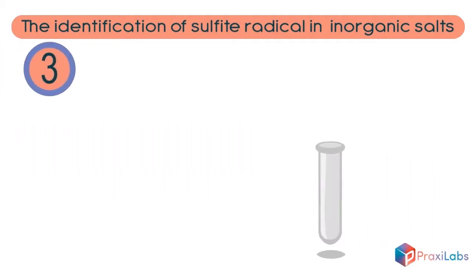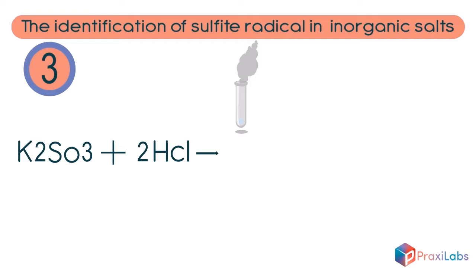Place a small amount of the salt in a test tube using a spatula. Then add drops of dilute hydrochloric acid. Notice the evolution of a gas that has a pungent smell. The reaction occurs as follows: Potassium sulfite salt reacts with dilute hydrochloric acid to produce potassium chloride in water and sulfur dioxide gas evolves.